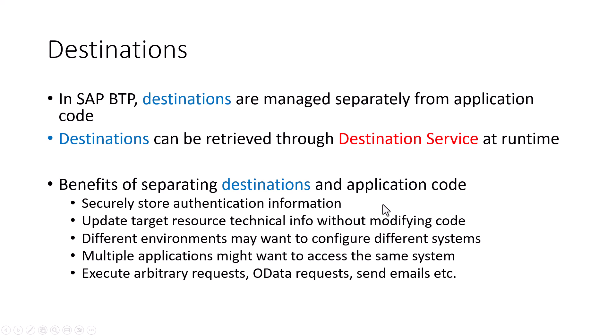When we build applications in SAP BTP, we typically do not store the technical info about the target system in our application code. We keep all the technical info about the target system in what is called the destination. So at runtime, with the help of a destination service, our application can retrieve the destinations. There are some benefits of separating the destinations from the application code. By putting all the technical information in the destination, we can securely store authentication information.